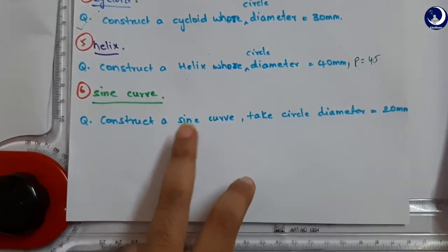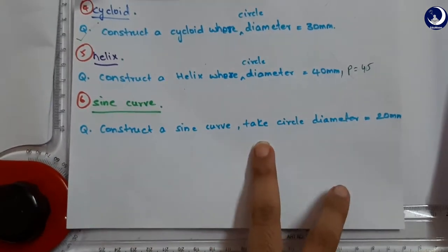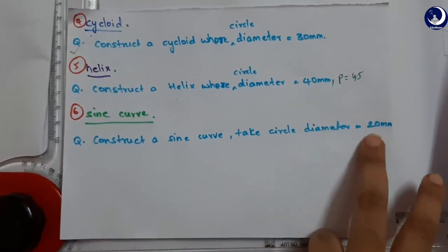Let us take the question: construct a sine curve generated by a circle, take that circle diameter as 20 mm.